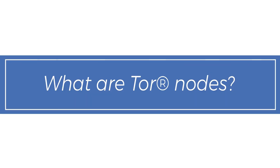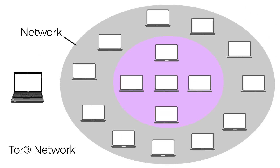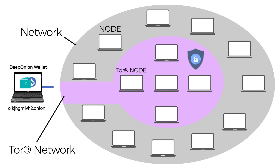What are Tor nodes? A node is a computer connected to a network. Many connected computers run Tor, and each one is called a Tor node. People volunteer to run Tor nodes to support privacy. DeepOnion wallets connect to these Tor nodes.